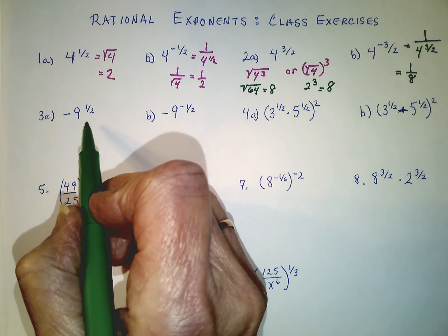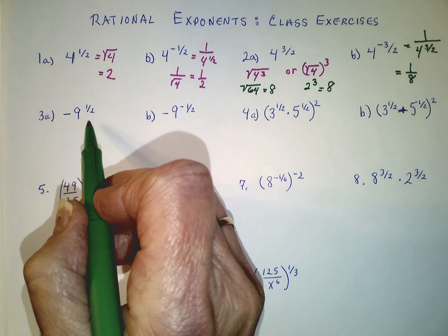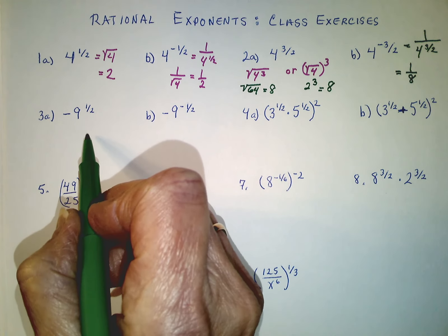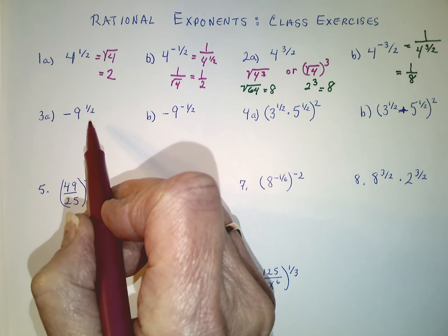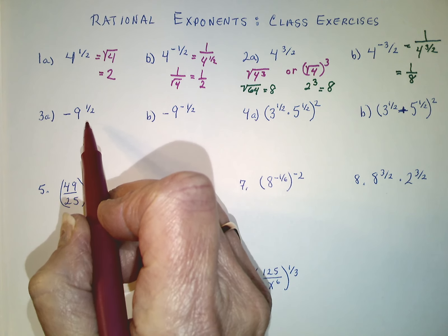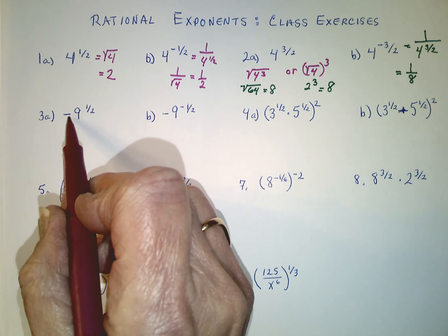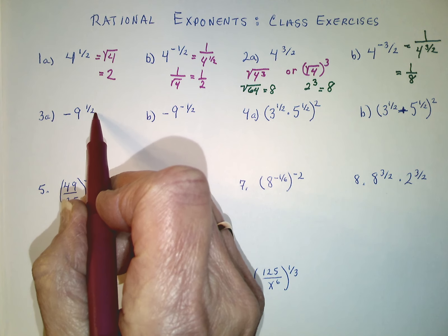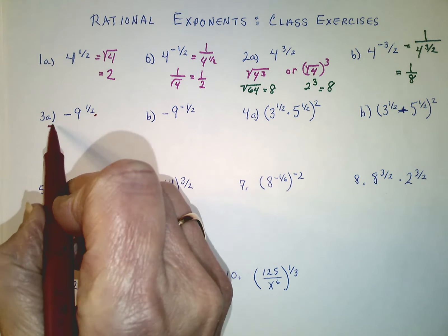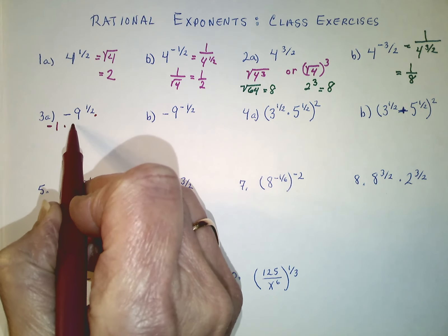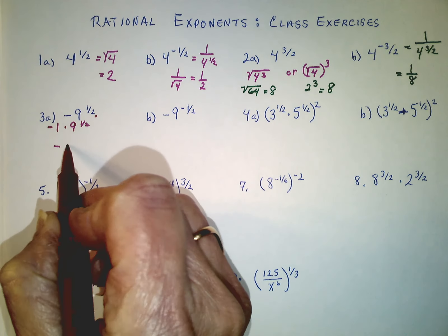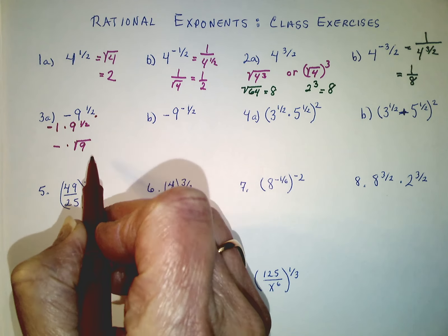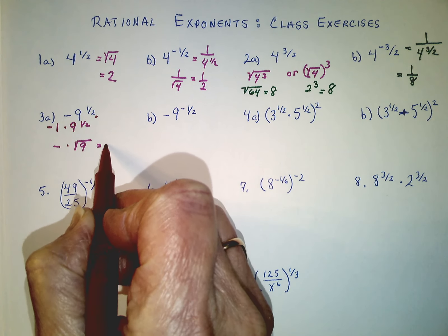For 3A, this does want us to take the square root, but the question is the square root of what? It's not the square root of negative 9. This negative sign is not part of what we're taking the power to. This is like negative 1 times 9 to the one-half, or negative 1 times the square root of 9, which comes out to be negative 3.